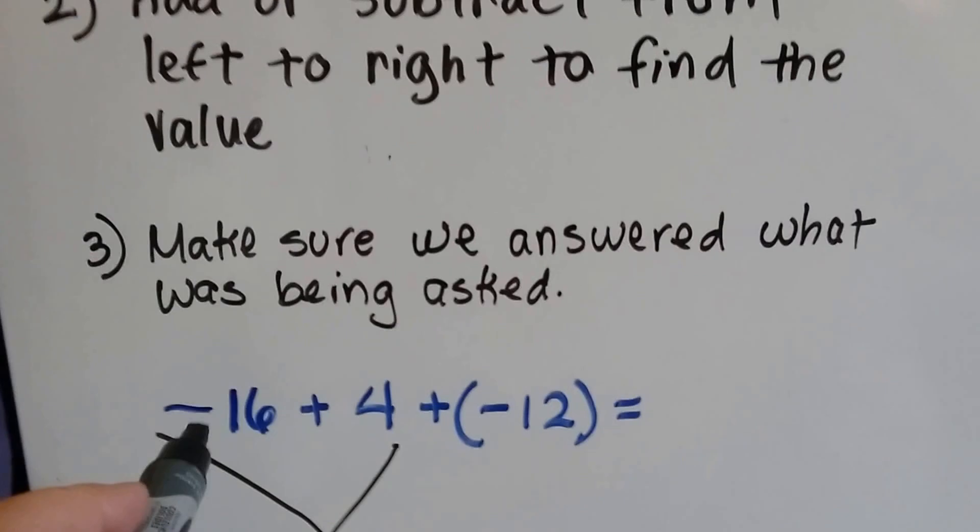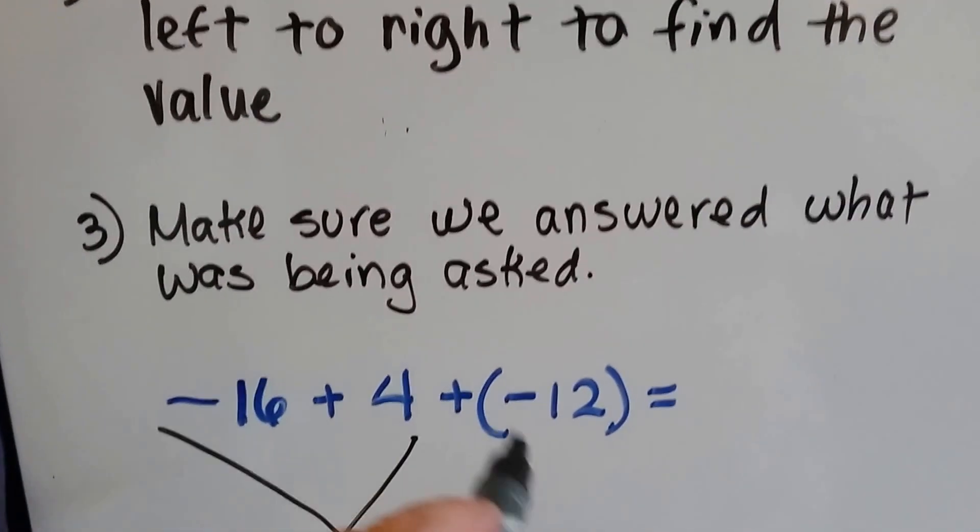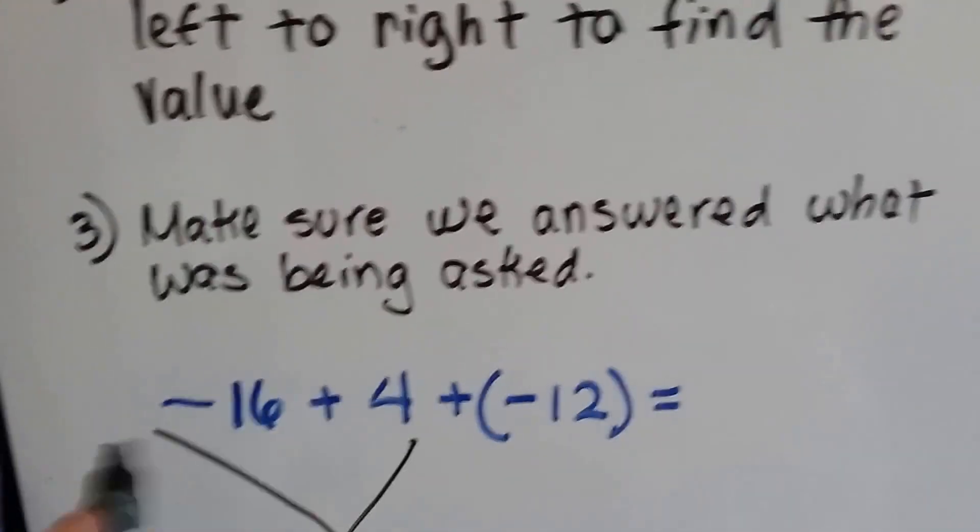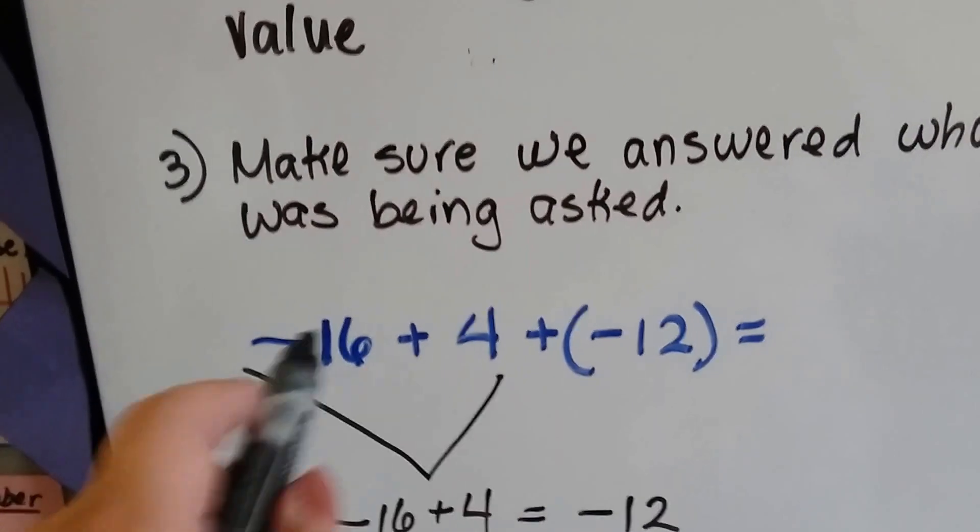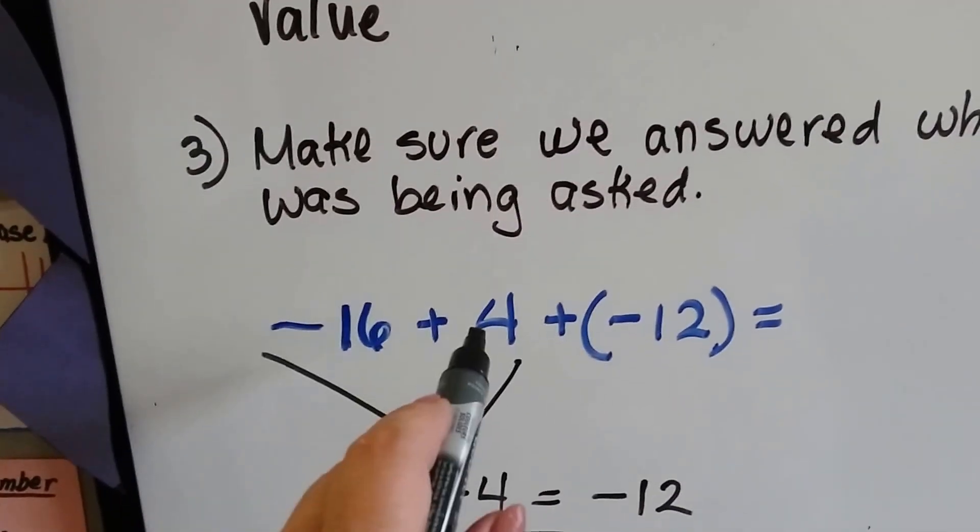Take a look at this one. We have negative 16 plus 4 plus a negative 12. So that's a lot going on right there. So we're just going to break it up into this little piece here, negative 16 plus 4.